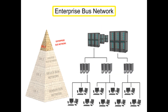The enterprise or information level network in a company connects all computers and departments together. It is the most overarching and complex of all the various network levels. This level of networking is primarily computer-driven, which allows for data collection, data monitoring, file transfers, and email exchange on a large scale.